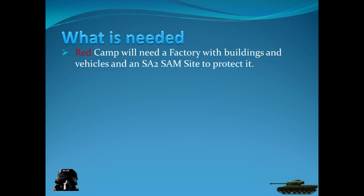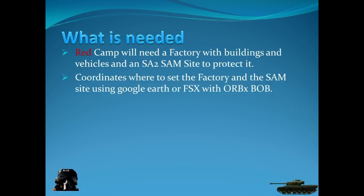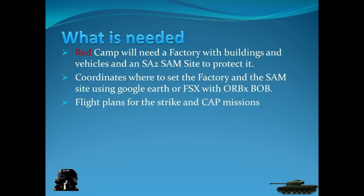The single player in the red camp will be protecting the factory site near Mostar in Bosnia and will be assisted by an SA-2 SAM that will be live. The red camp player will fly a CAP - a cover air patrol - to protect the factory. So what is needed? The red camp will need a factory with buildings and vehicles, and an SA-2 SAM site to protect it. Coordinates are needed to set the factory and the SAM using Google Earth or FSx with Orbix Bob.